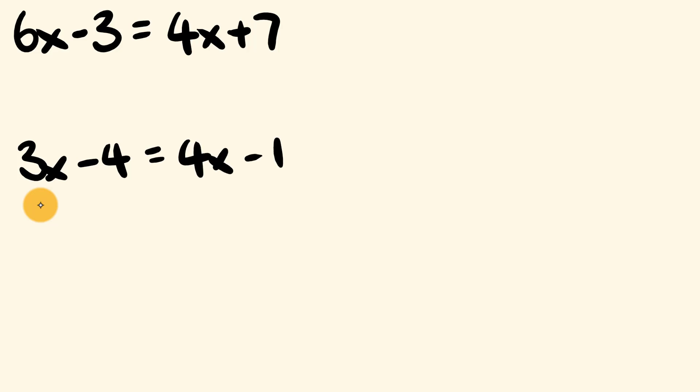So what about three of these examples that you can try? We'll start with 6x minus 3 is equal to 4x plus 7. Next we have 3x minus 4 is equal to 4x minus 1. And finally we have 2x plus 2 is equal to 6x plus 3.